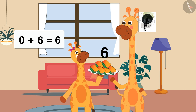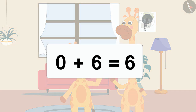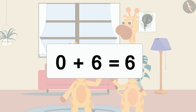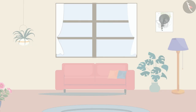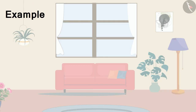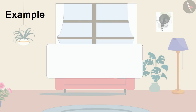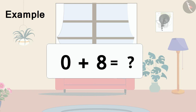Children, did you notice something here? When we add any number with 0, it will be equal to the number itself. Come, let's use another example. Can you tell me: if I add 8 to 0, then what is the total?